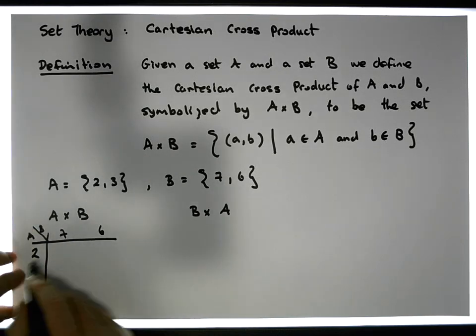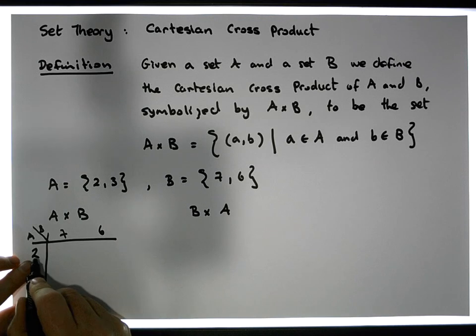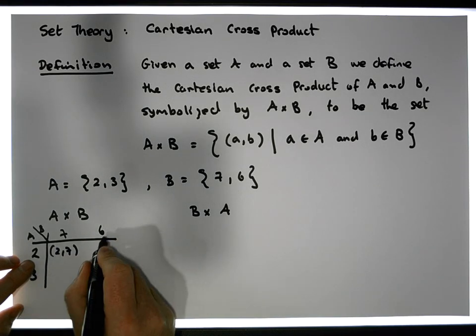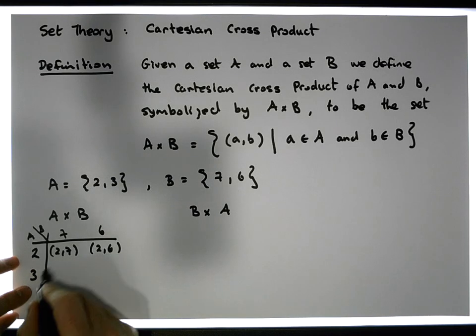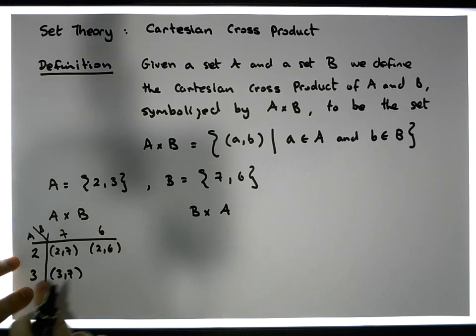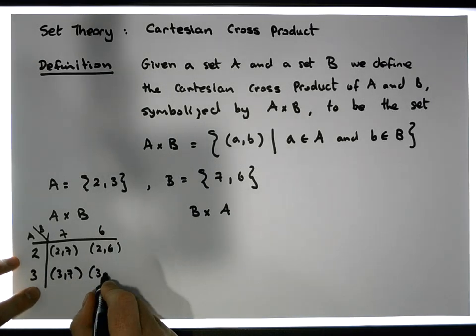And then what we do is we construct the ordered pairs. So 2 gets associated with 7, so (2,7). 2 gets associated with 6, so (2,6). 3 gets associated with 7, so (3,7). 3 gets associated with 6, so (3,6).